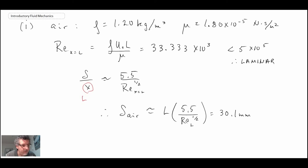We get 30.1 millimeters, or that's the equivalent of about 1.9 inches. So we can see here we have a plate that is 1 meter in length and the boundary layer is only about 30 millimeters or 3 centimeters at the end of the plate. So really the boundary layer is not growing that quickly. Let's take a look at what is happening with water.